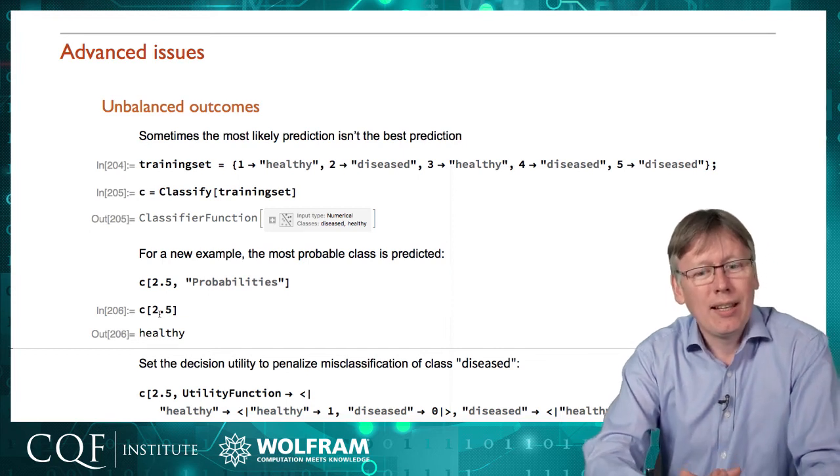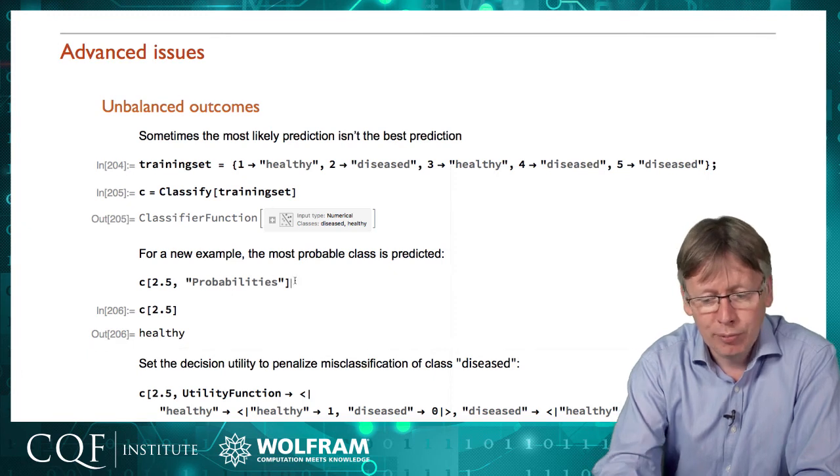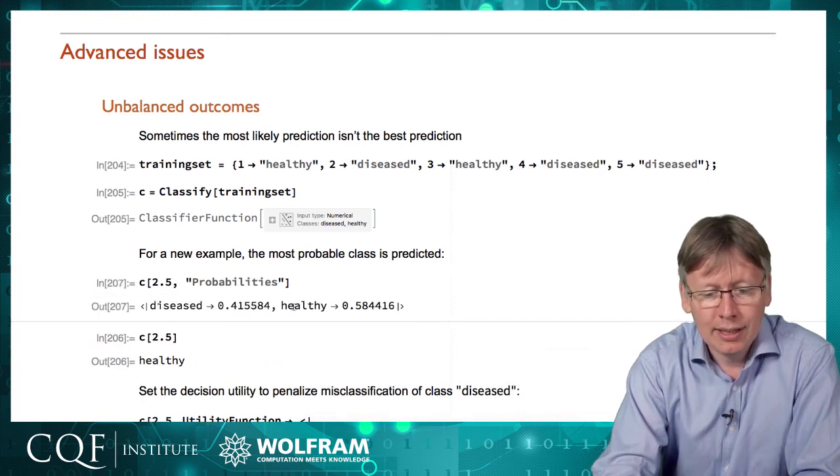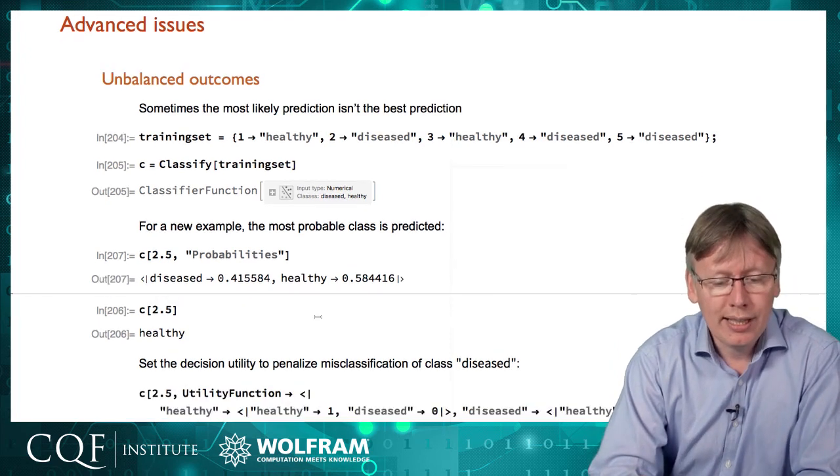Now we can now ignore the fact that that's necessarily the best prediction because the probability say diseased is healthy is 58 percent so therefore its best prediction is to say healthy. We're going to adjust that with what's called a utility function.